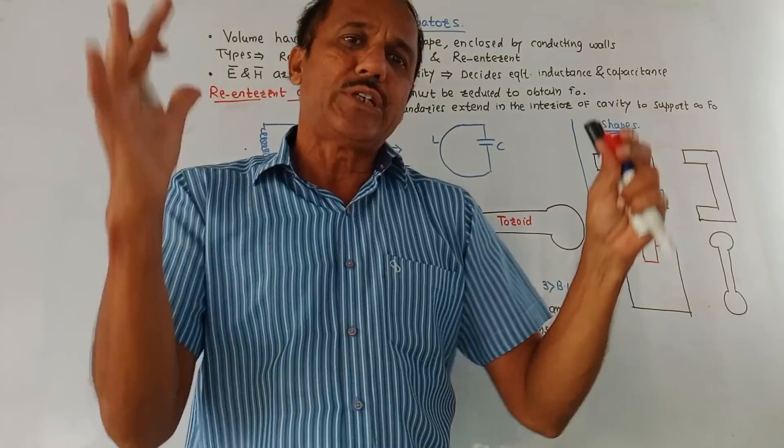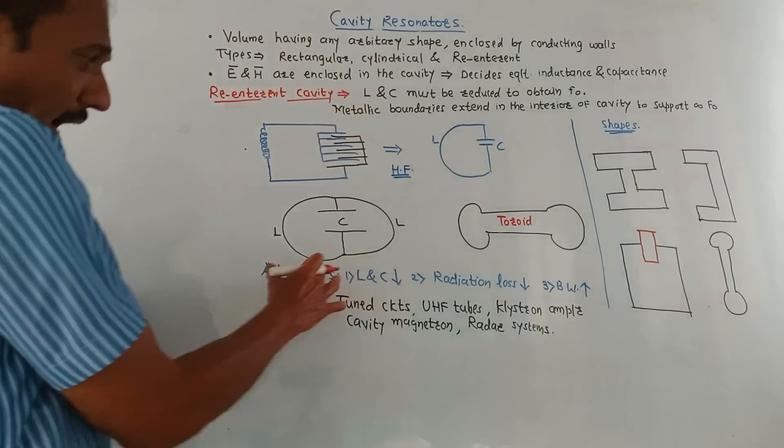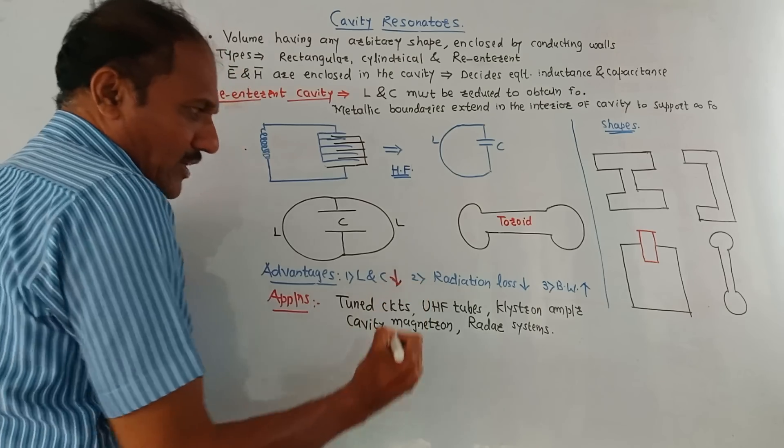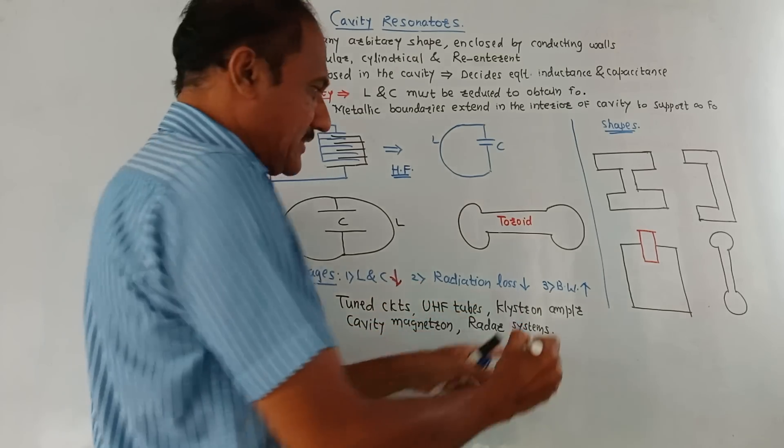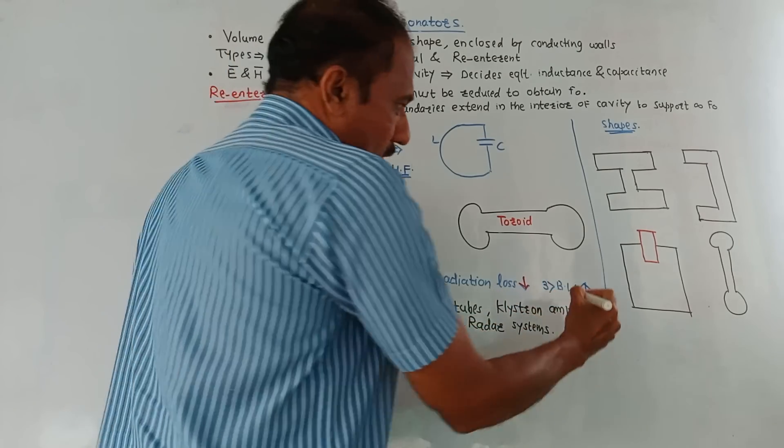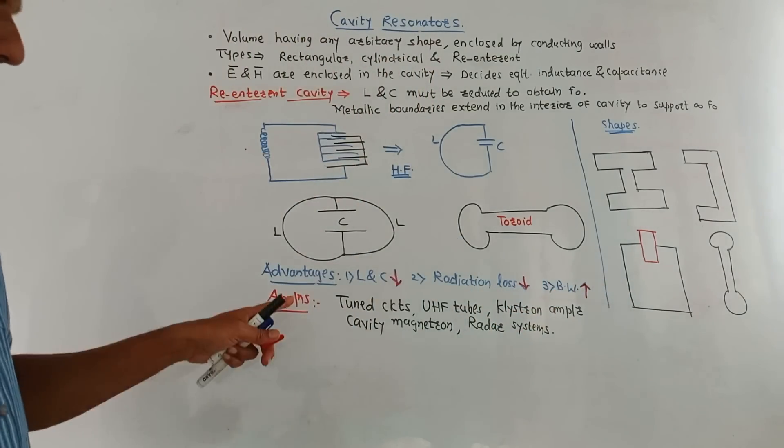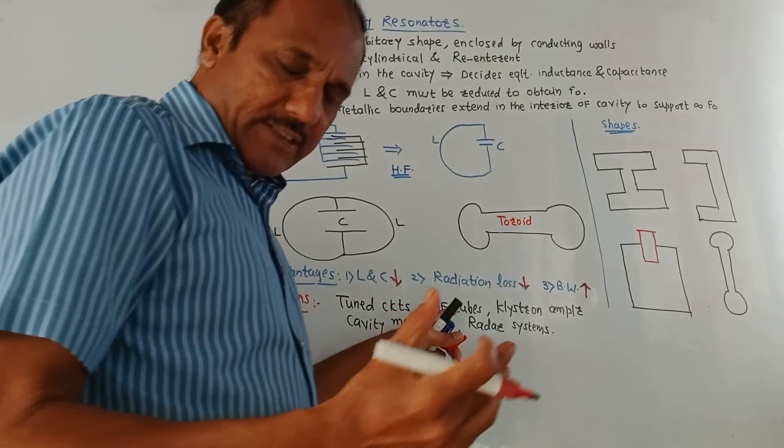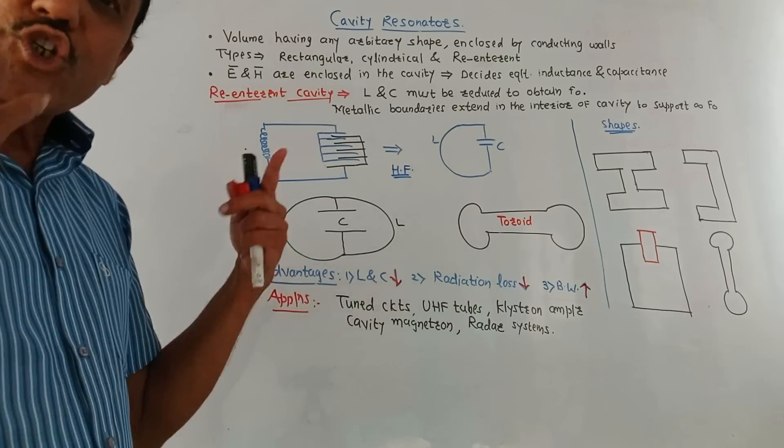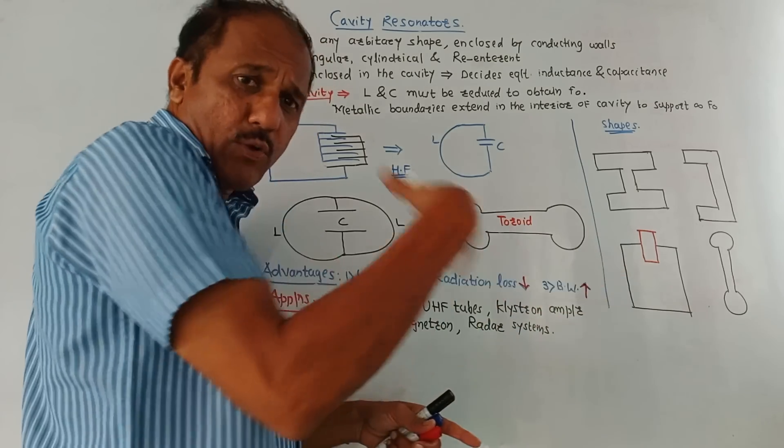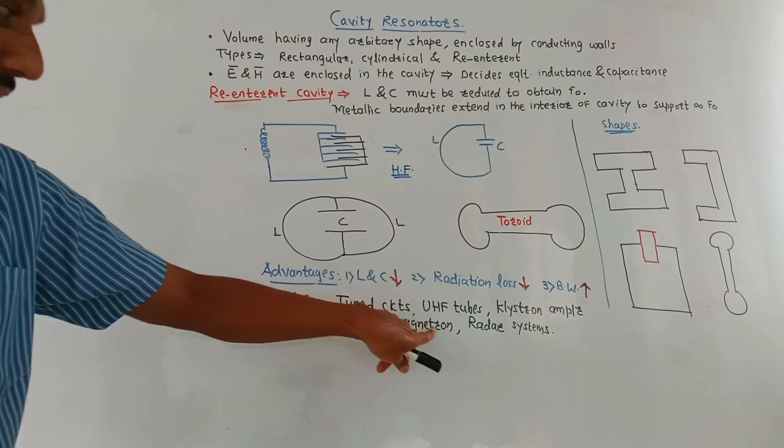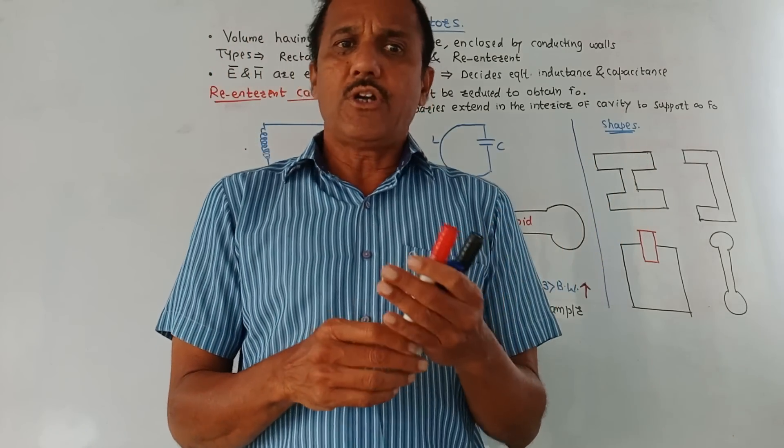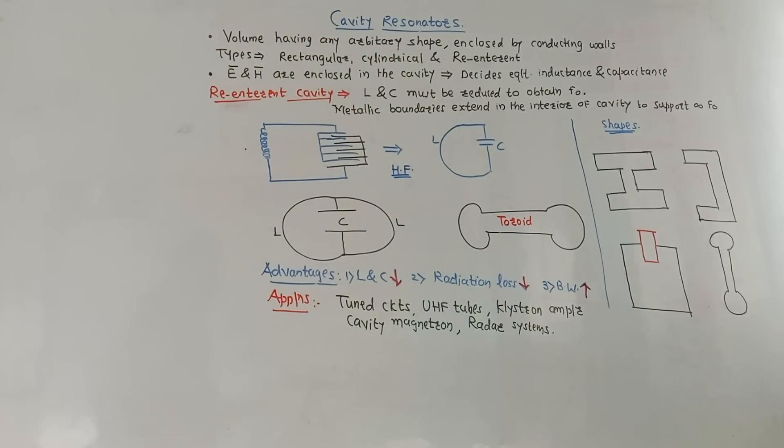Now these are the different shapes of re-entrant cavity. These are the shapes which are used to design the cavity. Advantages are L and C, that is inductor and capacitors, are reduced. Then radiation loss is reduced and bandwidth of the structure is improved. Applications: it is used in tuned circuits, then UHF, that is ultra high frequency tubes, then klystron amplifiers. All these terms we are going to study in the latter units. Then cavity magnetron and in radar systems. So dear students, that's it for unit number two. Thank you. Thanks a lot for watching this video.